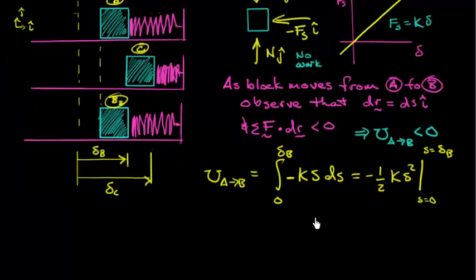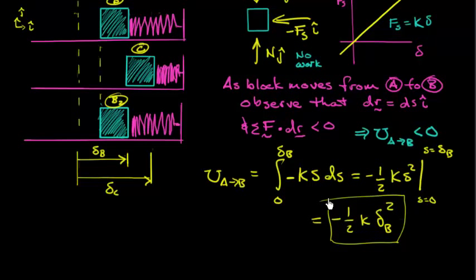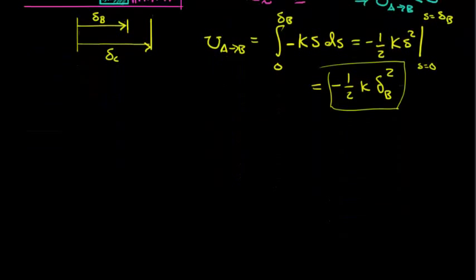A little bit more, so this becomes minus one-half k delta B squared, minus zero, or I can just leave the minus one-half k delta B squared. So there's my work. Pretty simple, right? Now although I've already answered my question right here, I'd like to think about this a little more deeply.